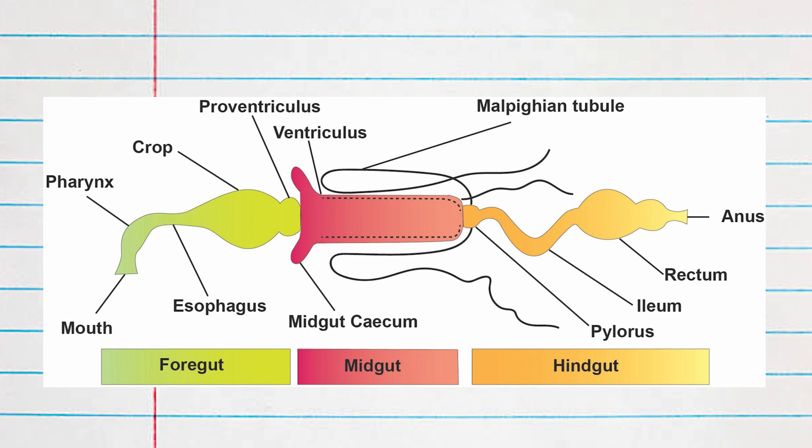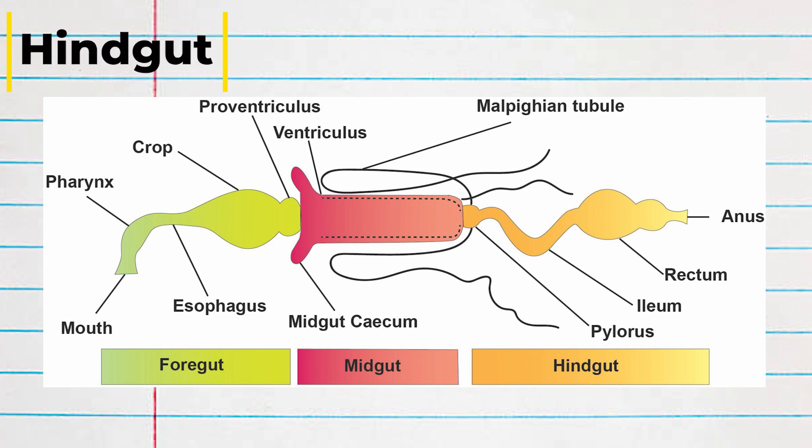The bulk of the midgut is taken up by the ventriculus, which serves as a stomach, chemically digesting food. The hindgut is specialized for disposal and nutrient reabsorption.